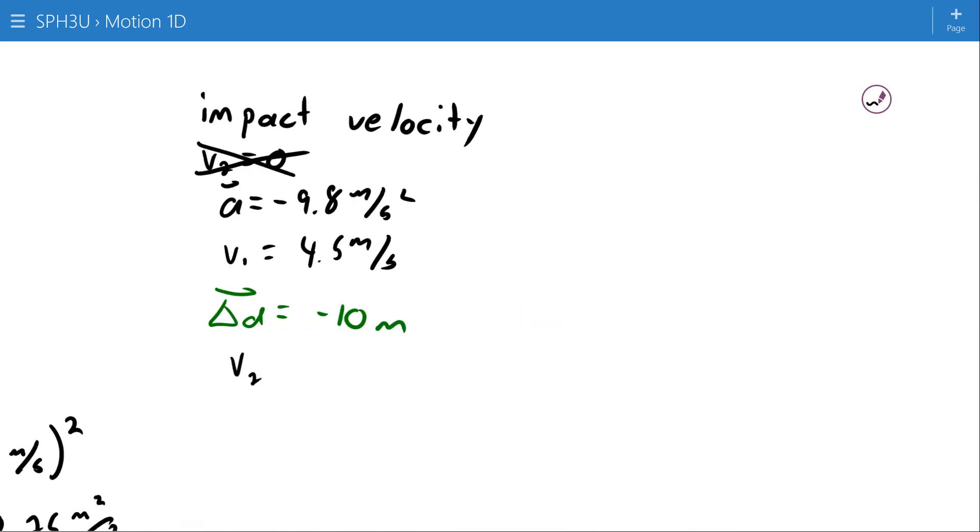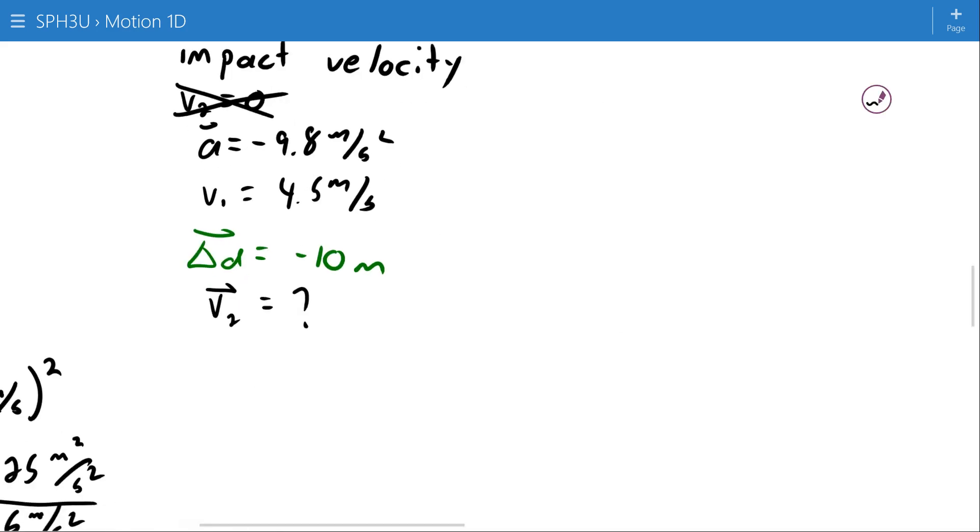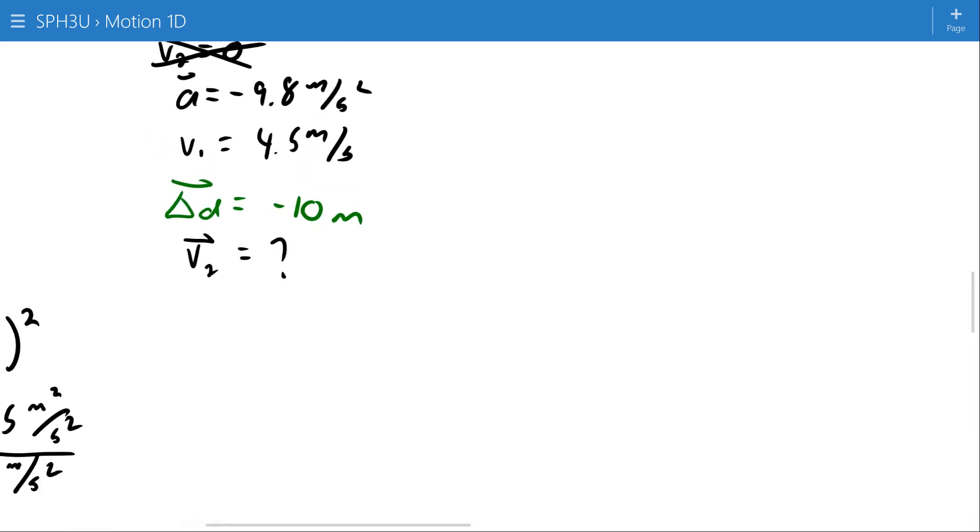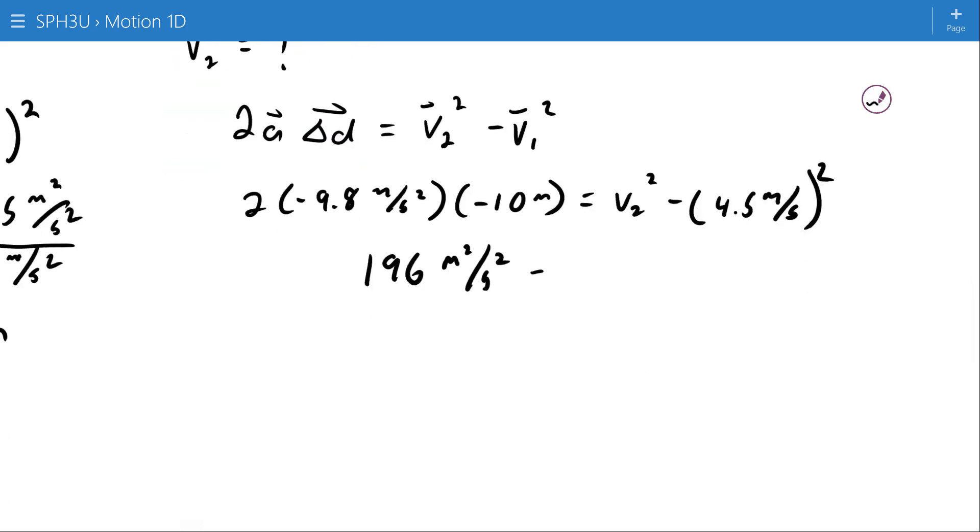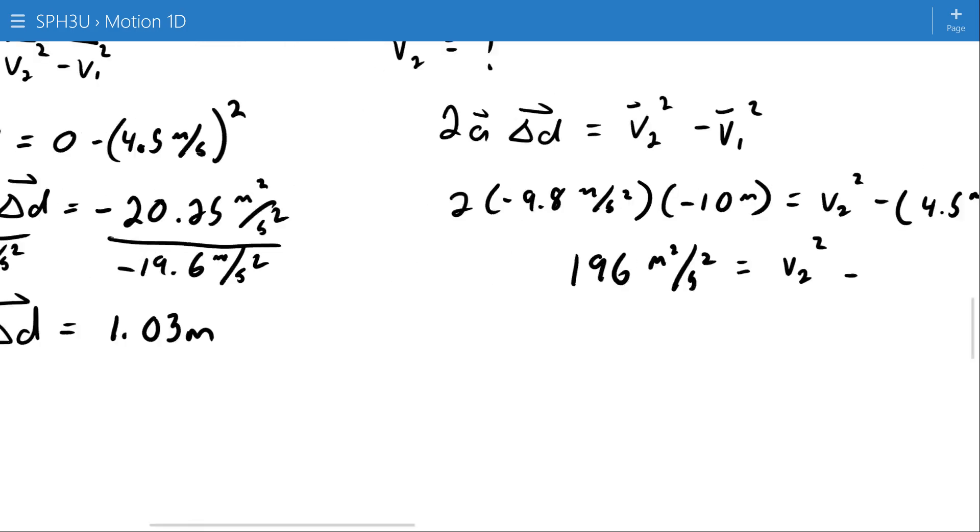Impact velocity means I'm looking for V2, and that means my equation is 2A delta D equals V2 squared minus V1 squared. So 2 times negative 9.8 meters per second squared times my delta D of negative 10 meters equals V2 squared minus 4.5 meters per second squared. This all works out to 196 meters squared per second squared. And this works out to 20.25.